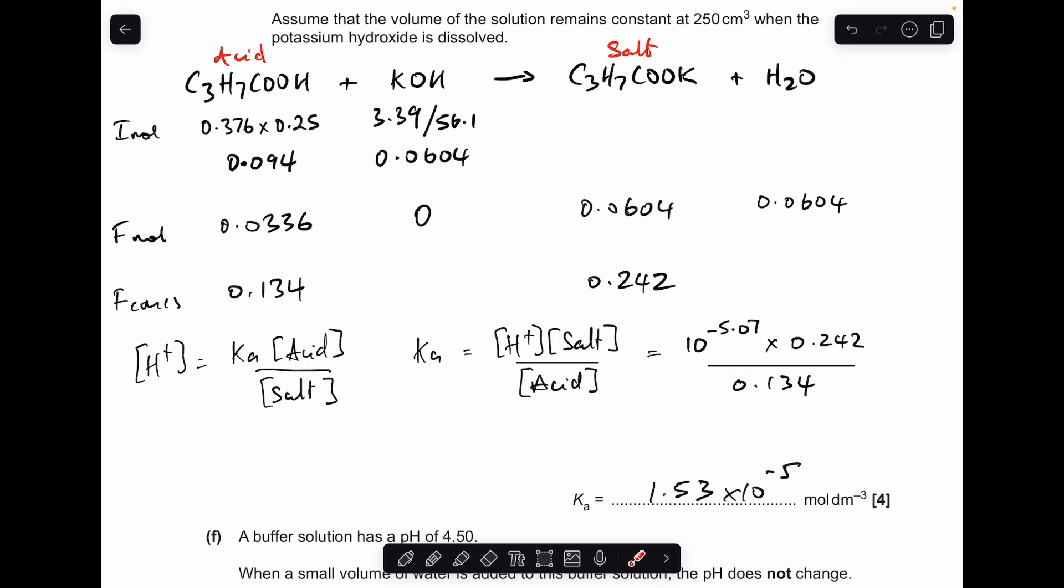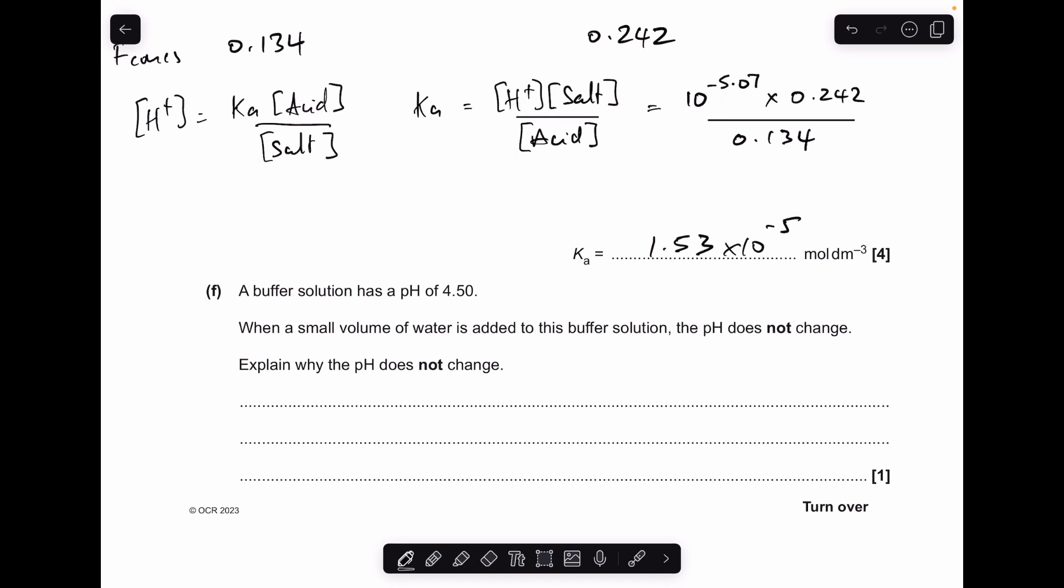So what I've just said links in nicely with part F. When a small volume of water is added to this buffer solution the pH doesn't change, explain why. That's because the key components, the acid and the salt, are in the same volume so the ratio of concentrations stays the same.